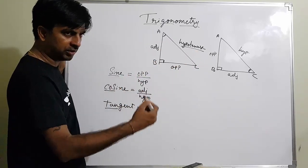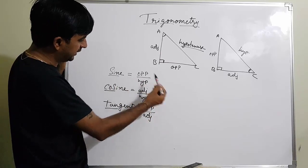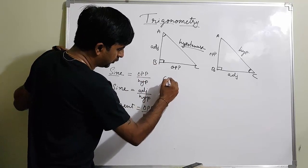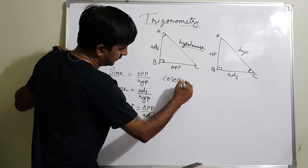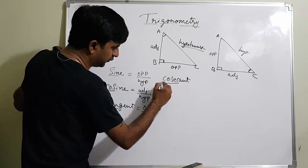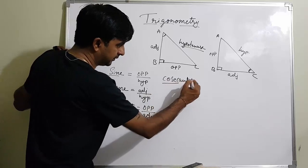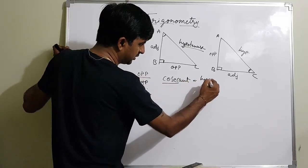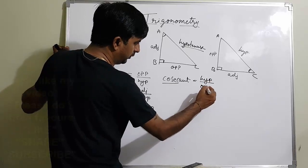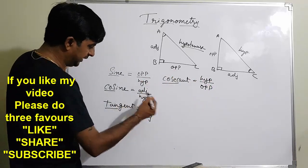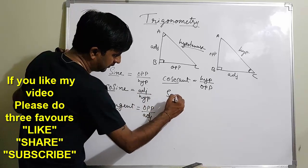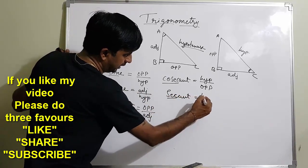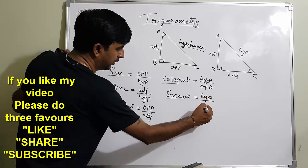We can find the other three ratios by taking the reciprocals. The reciprocal of sine is cosecant (cosec): cosecant equals hypotenuse divided by opposite. The reciprocal of cosine is secant (sec): secant equals hypotenuse divided by adjacent.